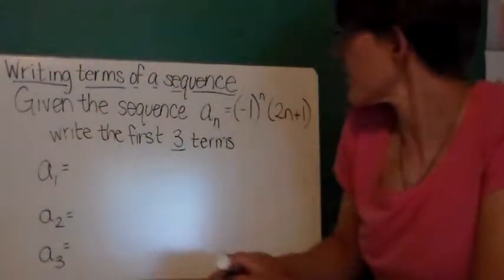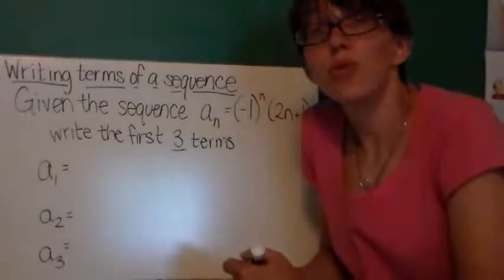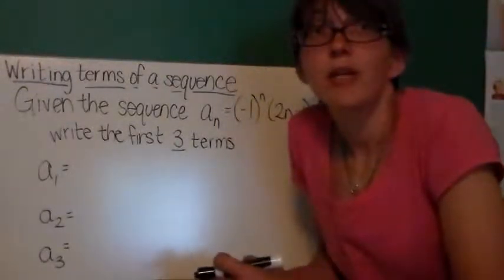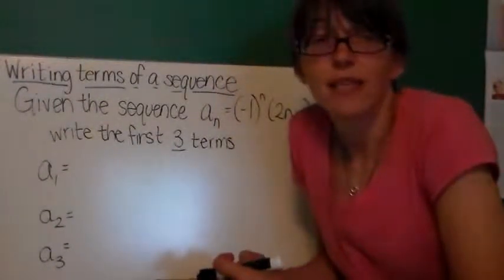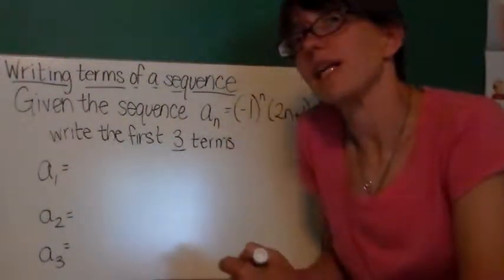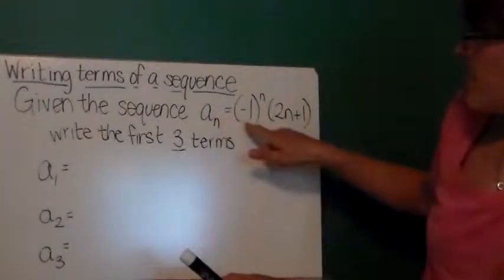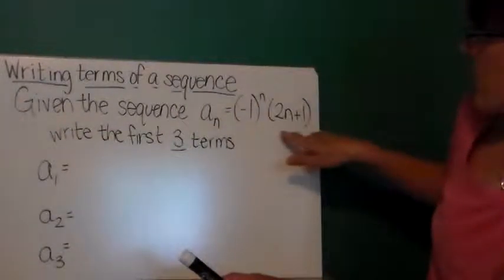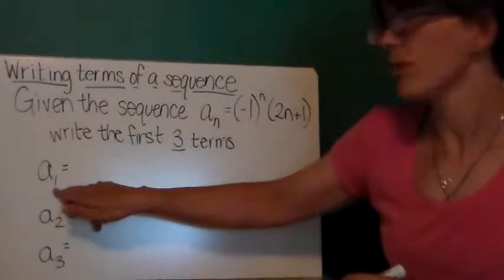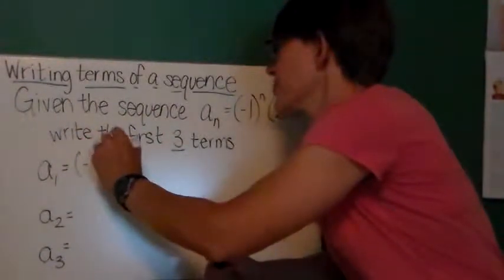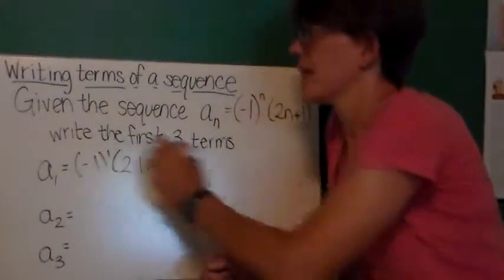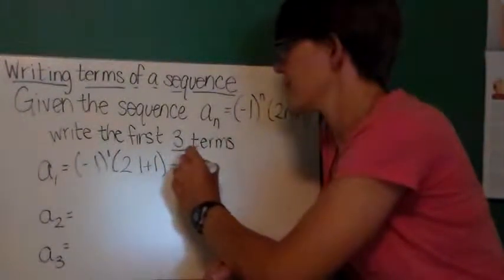Now, we can write the terms of the sequence if we are given the rule for the sequence. By the time you've worked with sequences for a little bit, you'll also be able to write the rule for a sequence if you're just given the terms. And if you're given a few terms, you should be able to predict, like, what's the 27th number in this sequence. But for right now, we're just going to focus on writing the terms of a sequence. So I have a sequence here. a sub n equals negative one to the nth power times two n plus one. So to find the a sub one term, the first term, I'm going to replace n with one. So I have negative one to the first power times two times one plus one. And I'll evaluate that. This is negative, two times one is two plus one is three. So overall, that's going to be negative three.